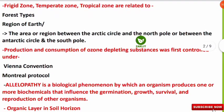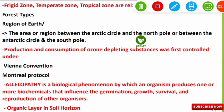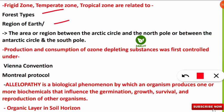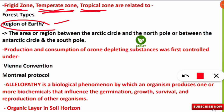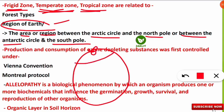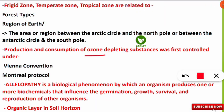The next question asked whether frigid zone, temperate zone, and tropical zone are related to forest types or regions of the earth. The correct answer is regions of the earth. The frigid zone is the area or region between the Arctic Circle and the North Pole, or between the Antarctic Circle and the South Pole. This is an important concept to note.